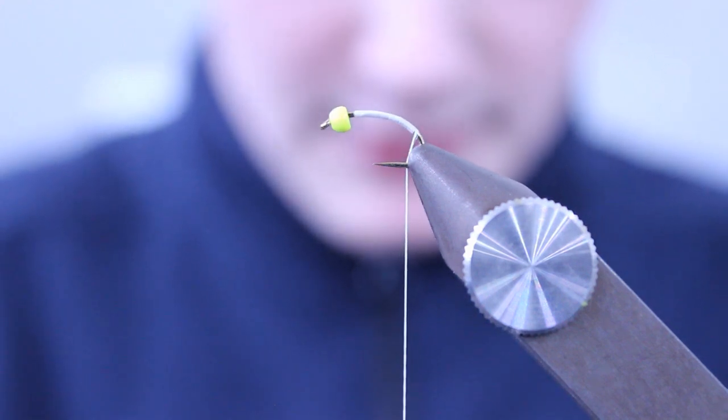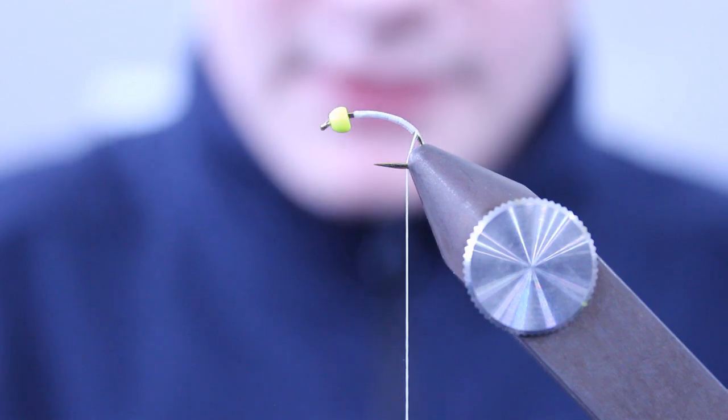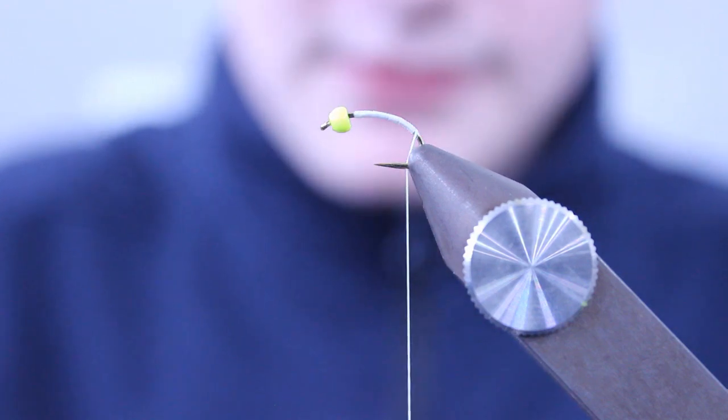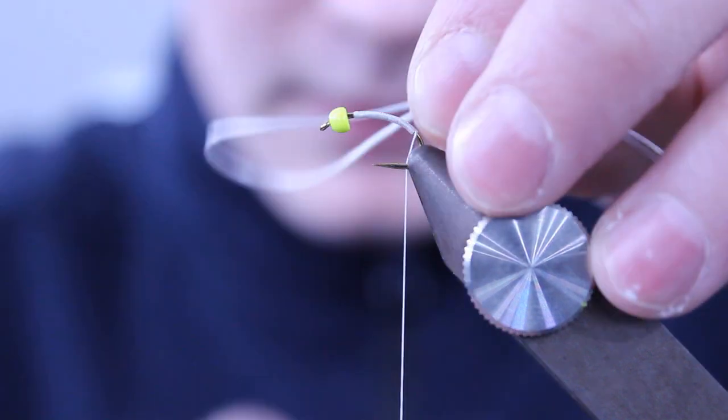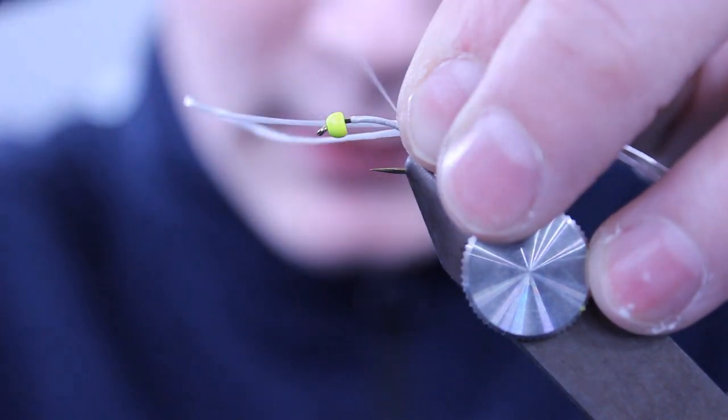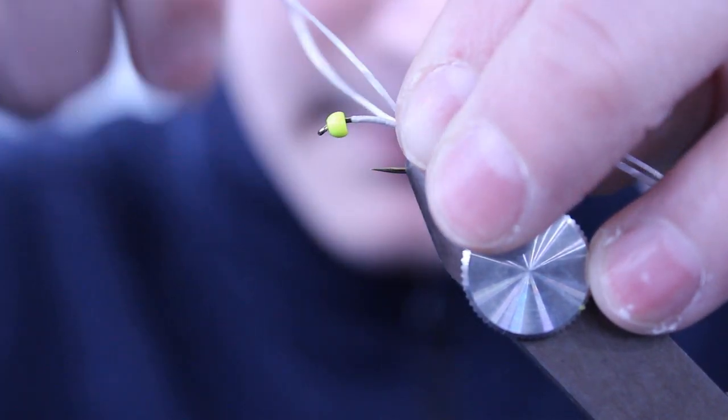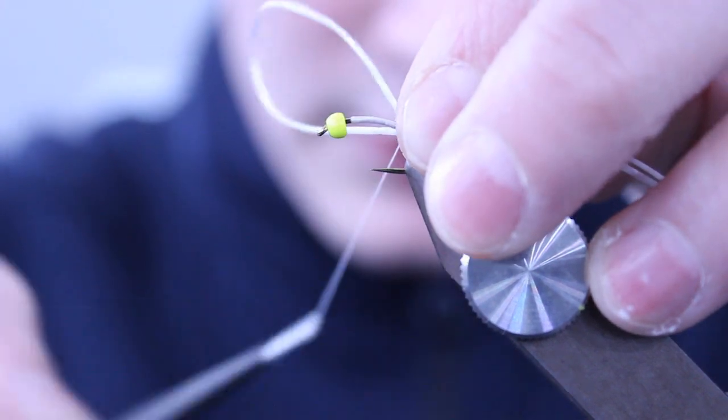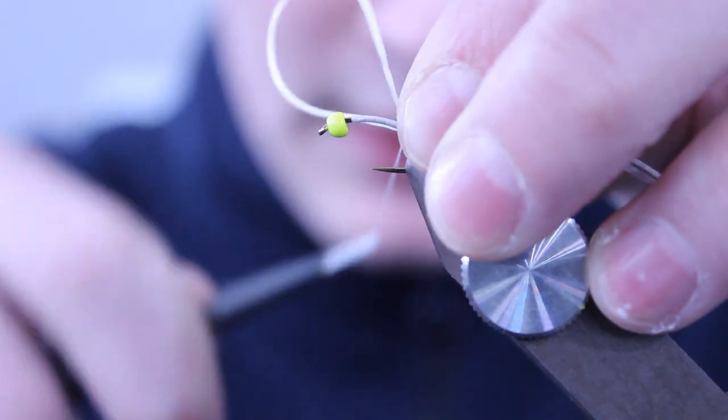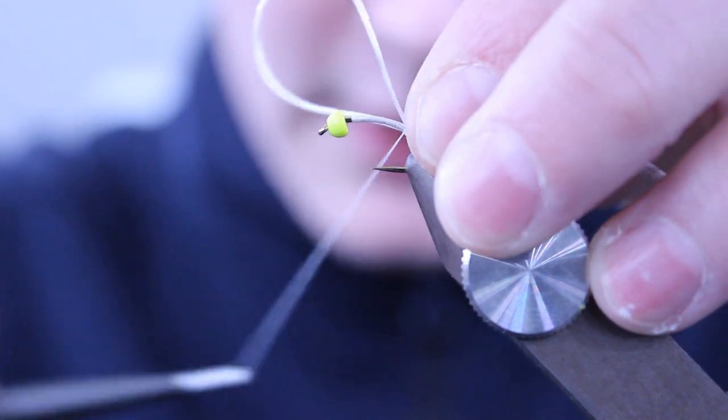For the tail I'm going to be using Flybox Spanflex in white. Catch it in with two turns. Make sure it's sitting on top of the hook.